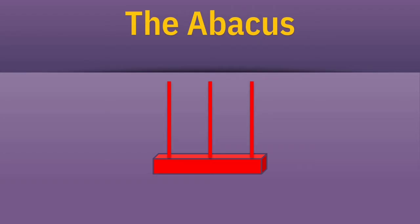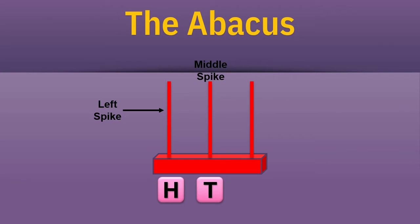Children, to show three-digit numbers there are three spikes in an abacus. The leftmost spike denotes hundreds, the middle spike denotes tens, and the rightmost spike denotes ones.